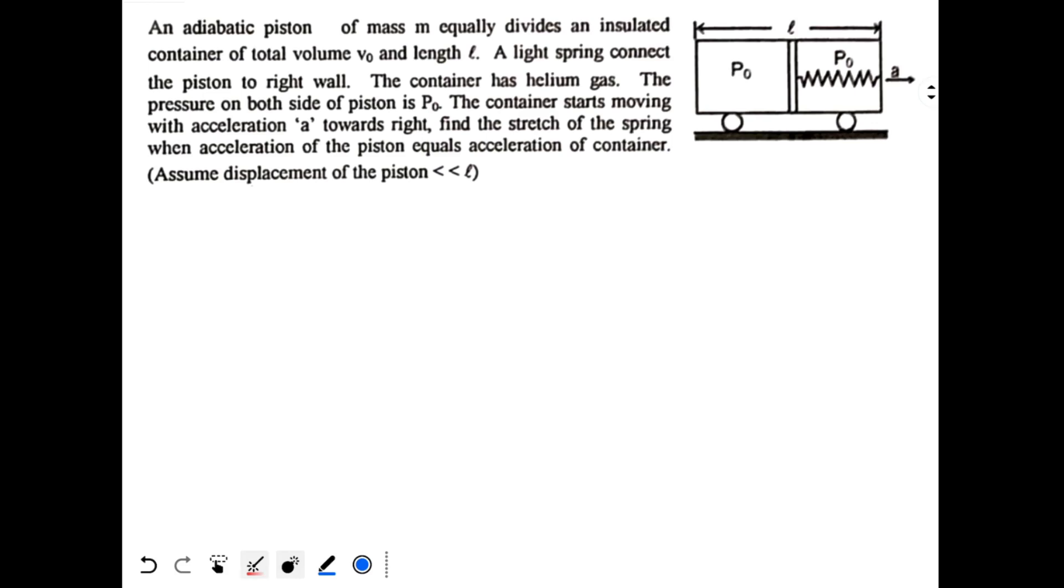Okay, see this very interesting question. An adiabatic piston of mass M equally divides an insulated container of total volume V0 and length L. Here we have an insulated container and here we have an insulating piston. It is dividing the container into two equal parts. So total length is L, so this is L by 2, this is L by 2.